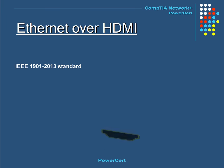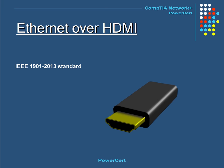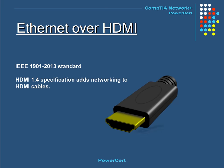The IEEE 1901-2013 standard is called Ethernet over HDMI. The HDMI 1.4 specification adds another channel to an HDMI cable for data with the capability of network communication. The connected devices using this feature will have the ability to send and receive data at 100 megabits per second Ethernet. So in addition to video and audio on a single cable, the HDMI cable will have the added ability of Ethernet networking.